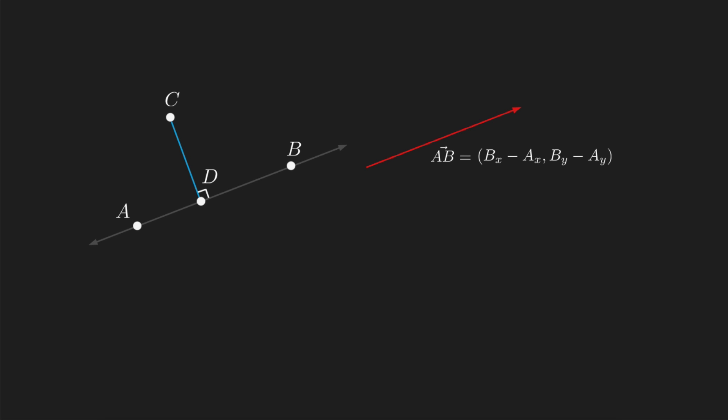I'll now call the perpendicular vector p, and we can calculate this easily, since its x-component is just the y-component of vector AB, multiplied by negative 1, so that's negative By plus Ay, while its y-component is simply the x-component of vector AB, so Bx minus Ax.